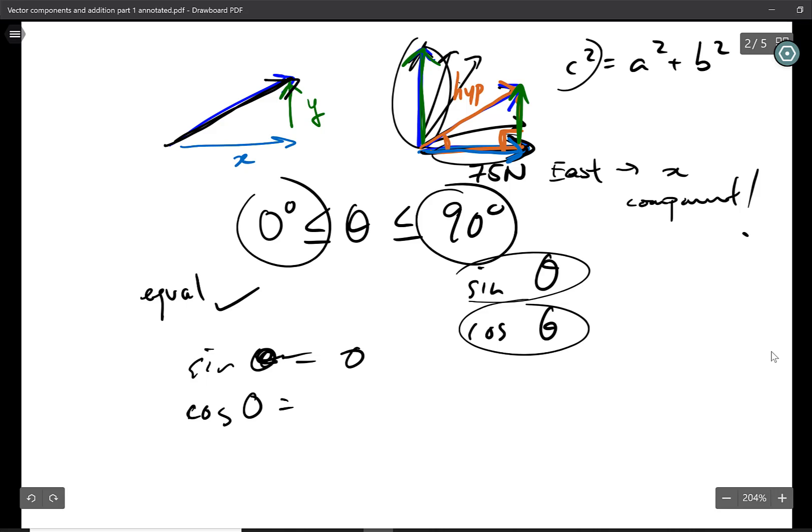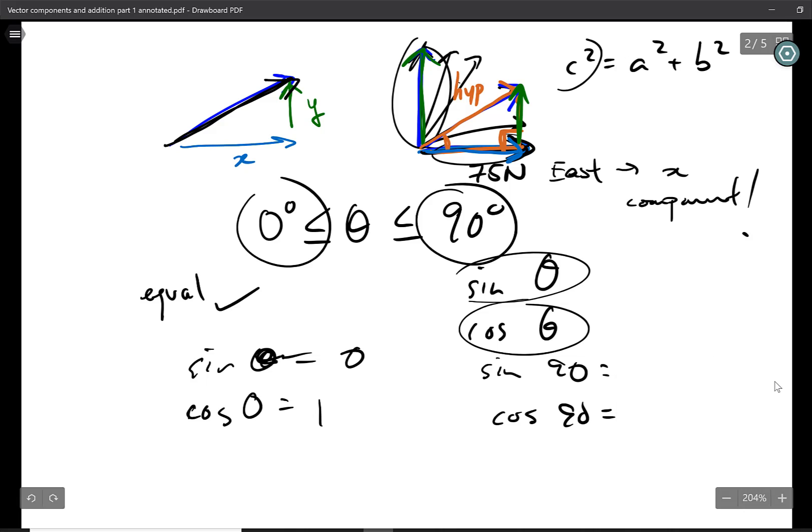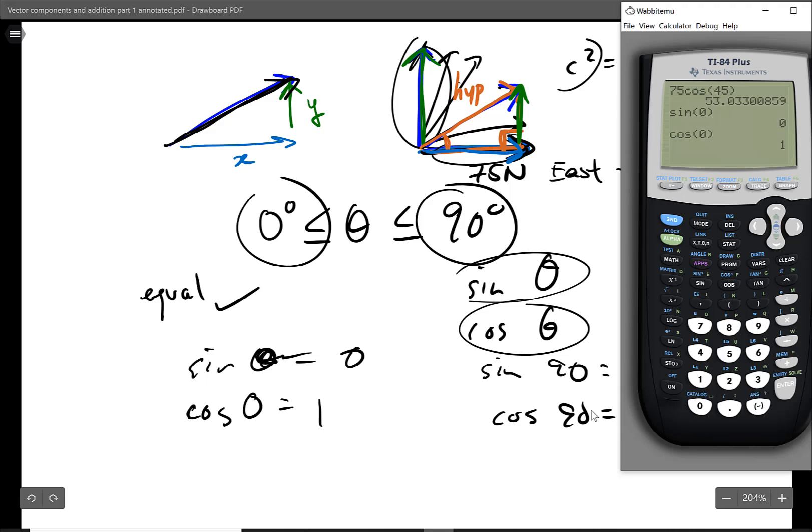Let's write these all out. Cosine of 0, sine of 90, cosine of 90. Let's check all of these. Cosine of 0, that gives us 1. Sine of 90, and I'll do this both together so we don't waste time here. Sine of 90, we get 1. Cosine of 90, we get 0.